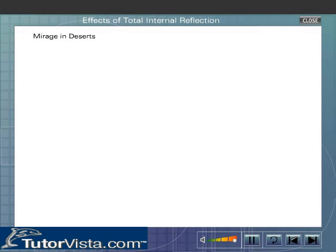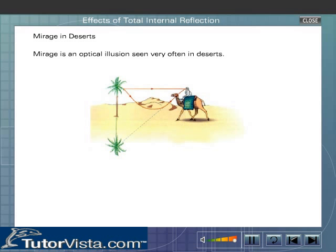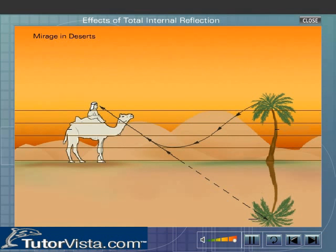Mirage in Deserts. Mirage is an optical illusion seen very often in deserts, due to which an observer sees inverted images of distant objects.